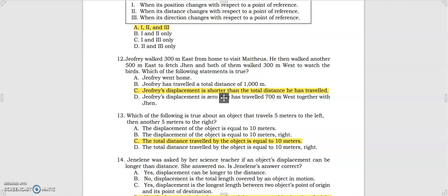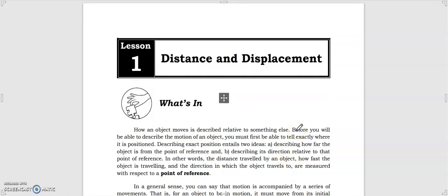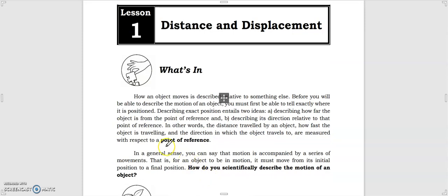Our topic for lesson one is all about distance and displacement. What is the difference between these two words? Before we proceed, we can describe motion or position by describing how far the object is from the point of reference and describing its direction with respect to a point of reference. The key phrase that keeps repeating is 'point of reference,' so what is a point of reference?